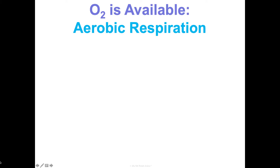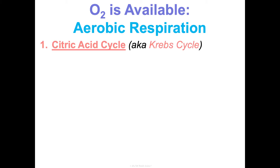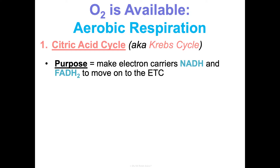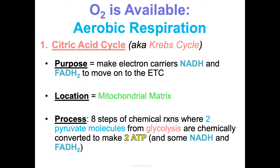Aerobic respiration is a two-step process, just like photosynthesis. The first step is the citric acid cycle, also known as the Krebs cycle — named for the guy who figured it out. The purpose is to make electron carriers, NADH and FADH2, that are going to move on to the ETC, which is the second stage. This takes place in the mitochondrial matrix — the fluid part of the mitochondria. It's an eight-step process where two pyruvate molecules from glycolysis are chemically converted to make two ATP and some NADH and FADH2.